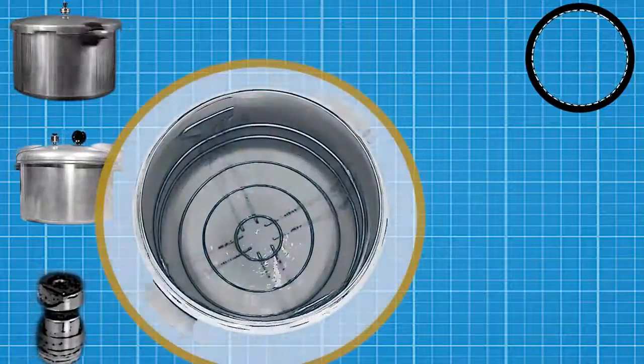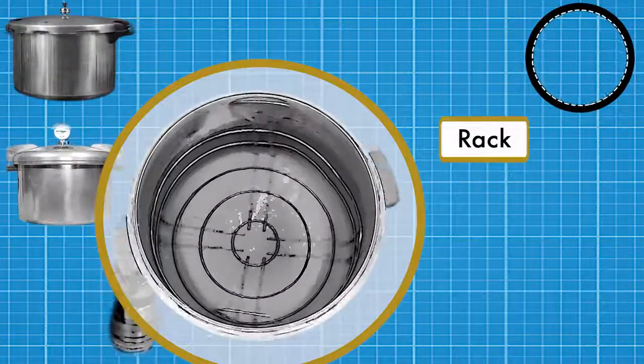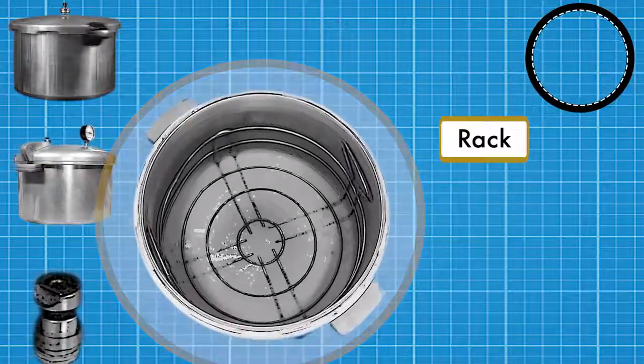Canners should come with a rack that allows water to circulate underneath the jars while they're in the canner. This helps to prevent jar breakage.